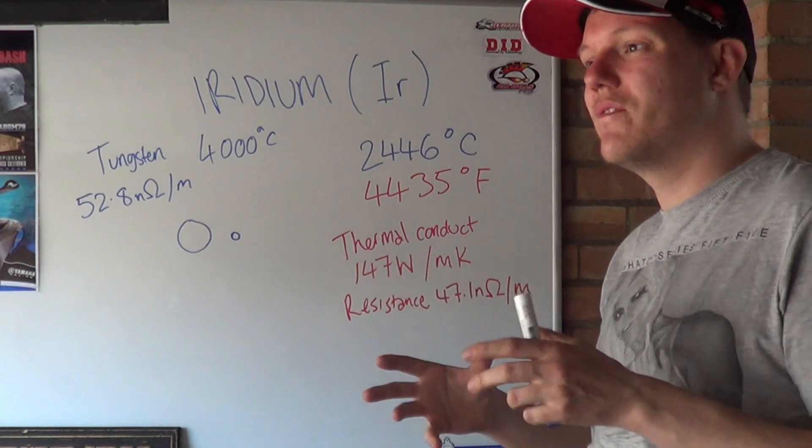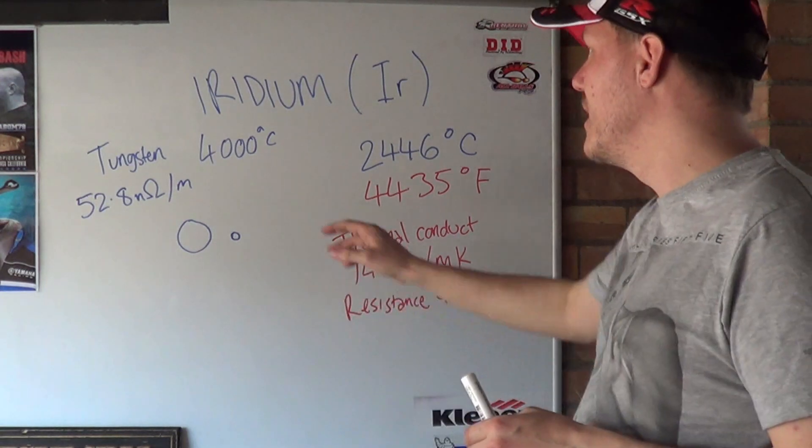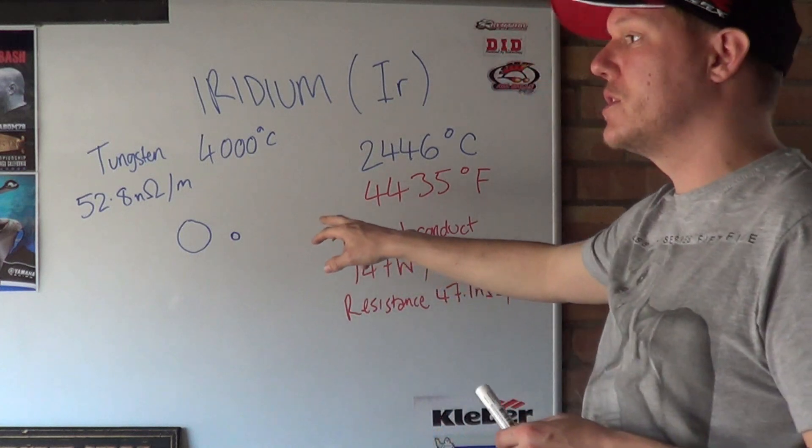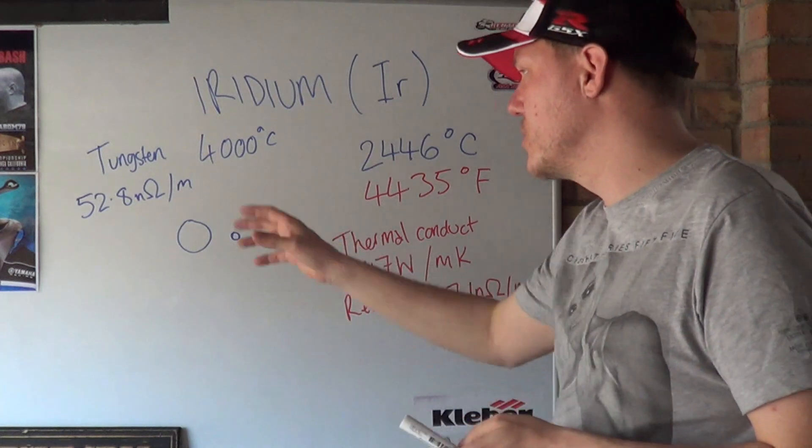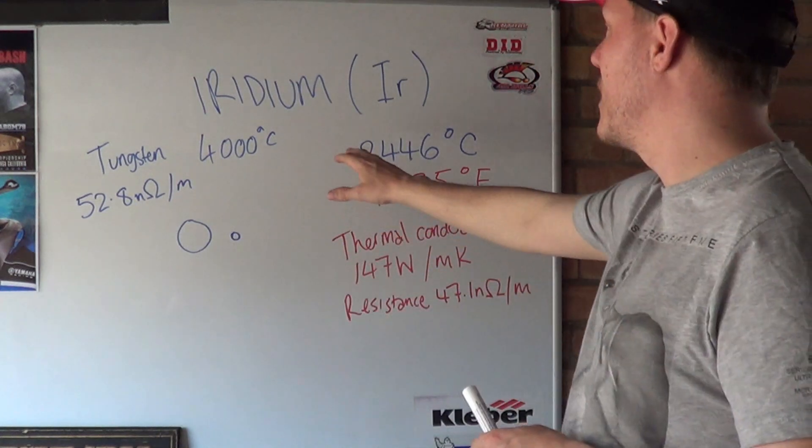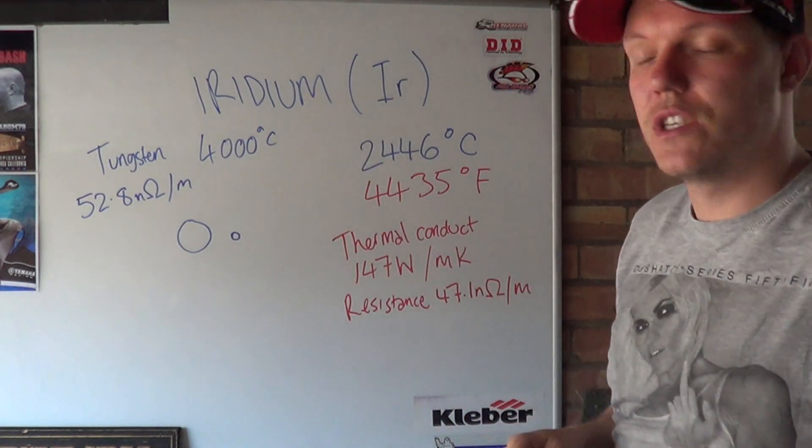However, when you get to these small sizes, it's all about how the molecular structure and the grain structure of these materials behaves and how they have phase transitions. Iridium at these high temperatures can maintain its structure a lot better than tungsten can. That's the reason why iridium is one of the best to use.